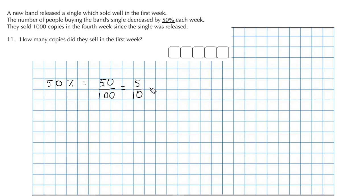But either way, this is going to give you one half, 1 over 2. So 50% is the same as half, as one half. So that means every week the band sells half as much as they did the previous week.